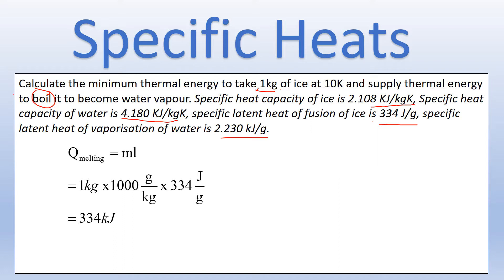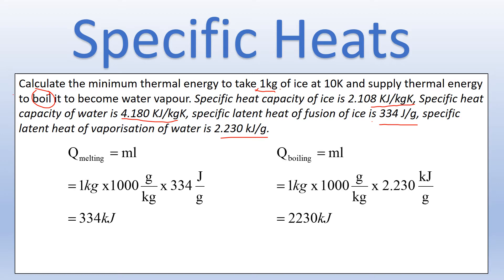Let's start with the state changes. First, melting from ice into water: the latent heat of fusion is in joules per gram, so we convert the kilogram into grams by multiplying by 1000, then multiply by the joules per gram, giving 334 kilojoules. We do exactly the same for the transition from liquid to gas, or boiling: convert kilograms into grams, and the latent heat is in kilojoules per gram, giving 2230 kilojoules of energy to go from liquid to gas. That gives a total energy just for the state changes of 2565 kilojoules.